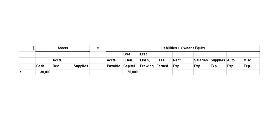On the other side of the equation we have accounts payable, or liabilities — a promise we've made to pay someone else, money we owe them. And then we have the owner's equity accounts. The capital account represents money that Mr. Eisen has contributed to the company, or the net earnings he's earned as the company has grown. Since this is a brand new company just being set up, there are no earnings.